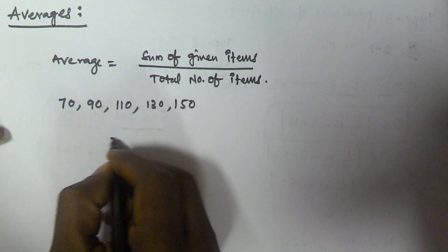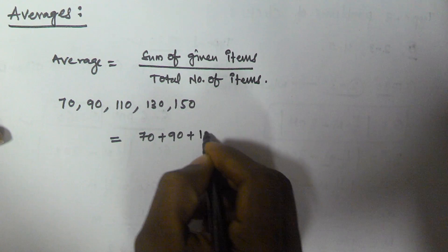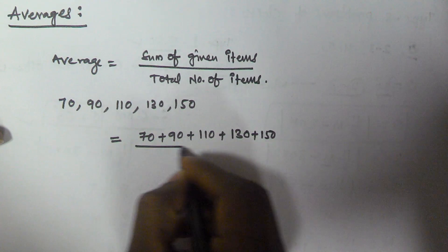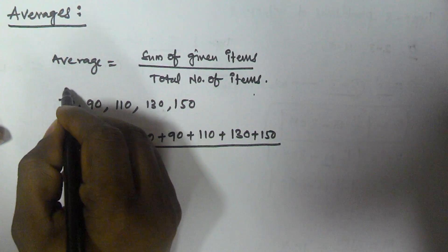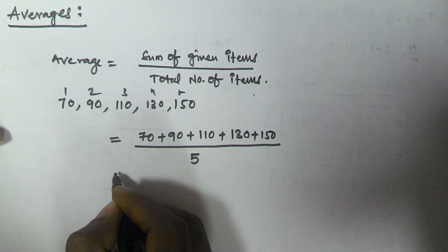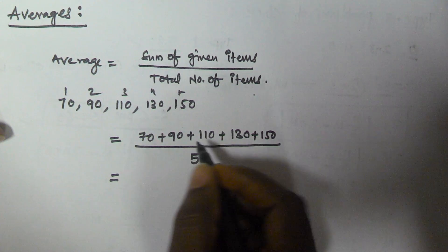The sum of the given items is 70 plus 90 plus 110 plus 130 plus 150, divided by the total number of items. The number of items we have: one, two, three, four, five - so five items.